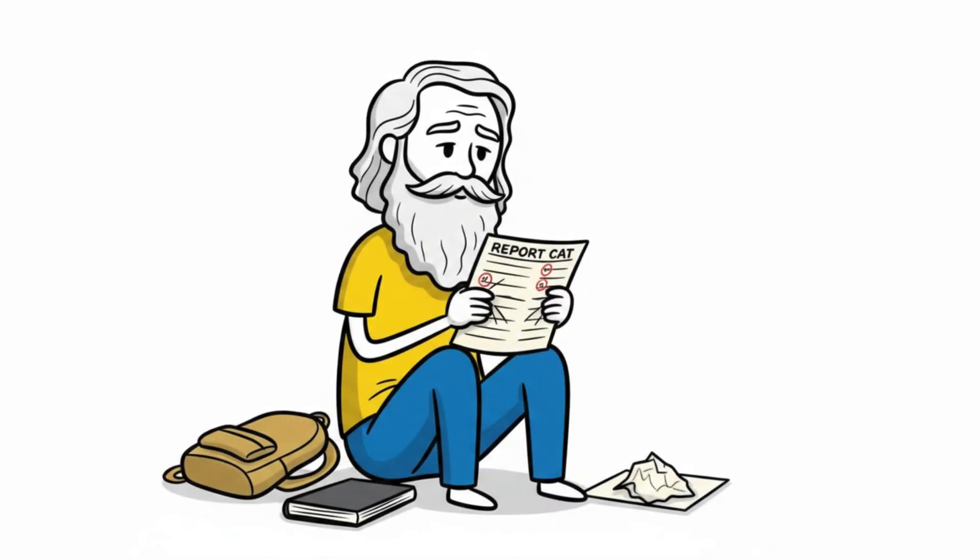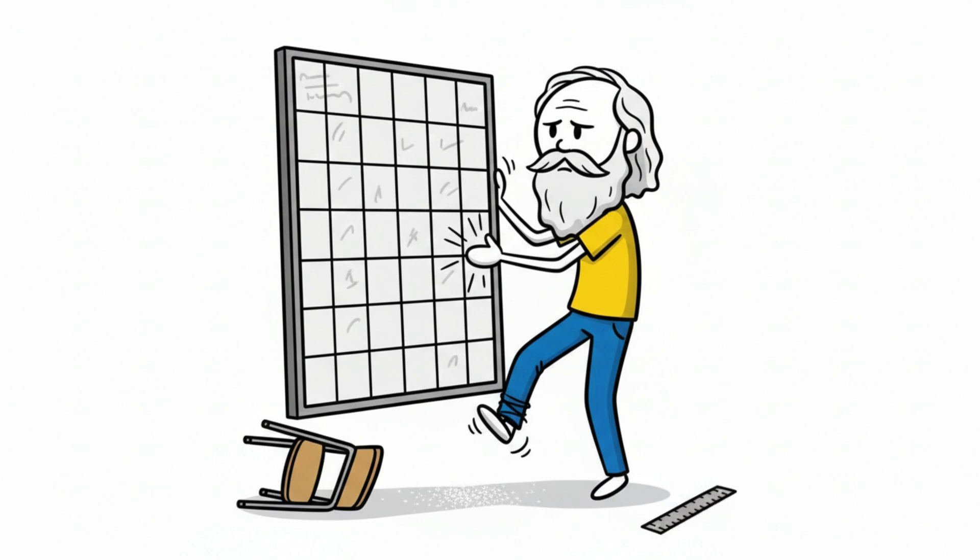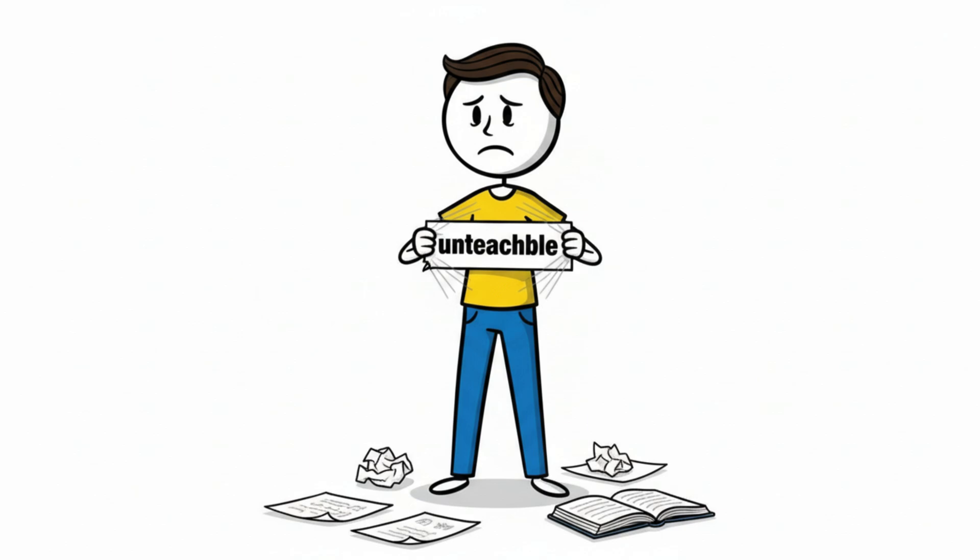Charles Darwin wasn't a star student either, and he hated memorization and drifted through school like someone whose mind didn't fit the system. Thomas Edison was pushed out of formal education and labeled as unteachable.